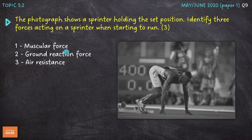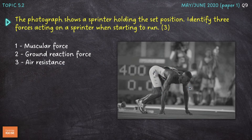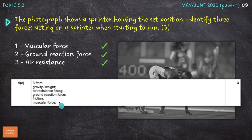I've gone for muscular force, which is produced by the muscles and applied against the starting blocks. Ground reaction force, which is applied by the starting blocks back against the sprinter and propels them forwards and upwards from the blocks. And then air resistance — as soon as they start to move, air will resist the motion of the performer, and air resistance increases the faster we move. Other forces we could have gone for include gravity or weight, and friction. So three of those for three easy marks.